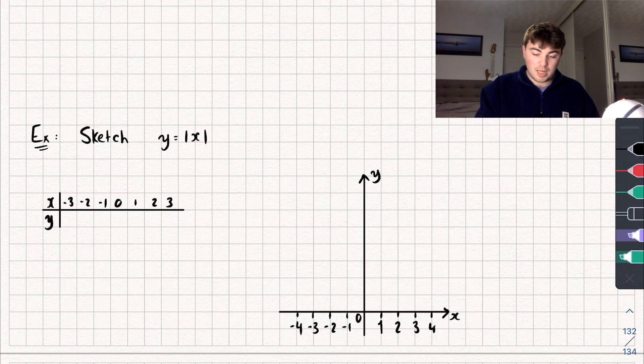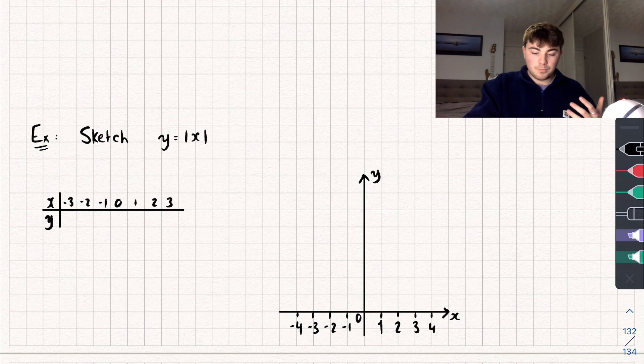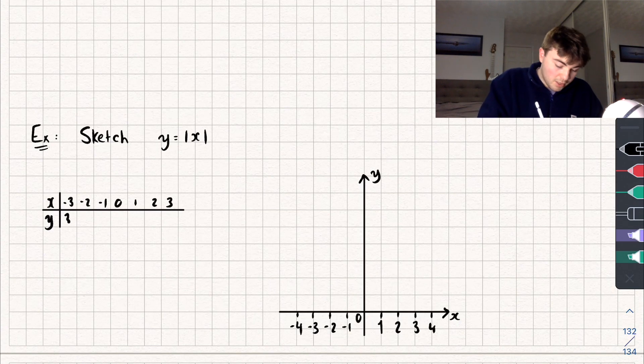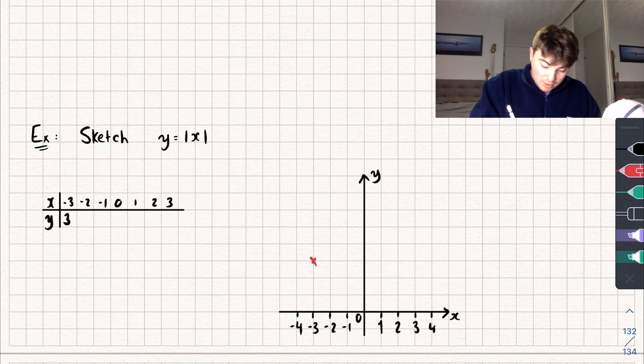So I've got a little table just over here. We're going to complete the table and then plot the points. If I have x equaling negative 3, well the modulus of negative 3 is positive 3, so we'll write that in and I'll plot that on the graph. So we've got negative 3 is going to output positive 3, so that's going to be somewhere like here.